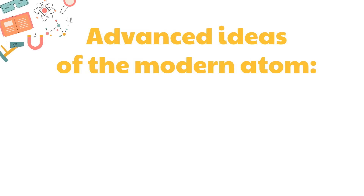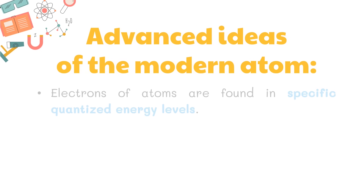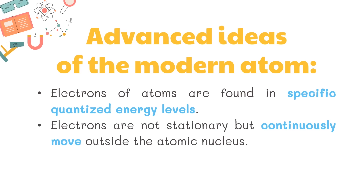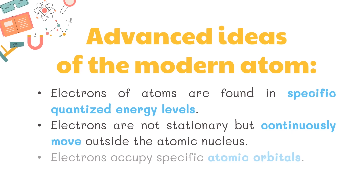Advanced ideas of the modern atom include the following: electrons of atoms are found in specific quantized energy levels; electrons are not stationary but continuously move outside the atomic nucleus; and electrons occupy specific atomic orbitals.